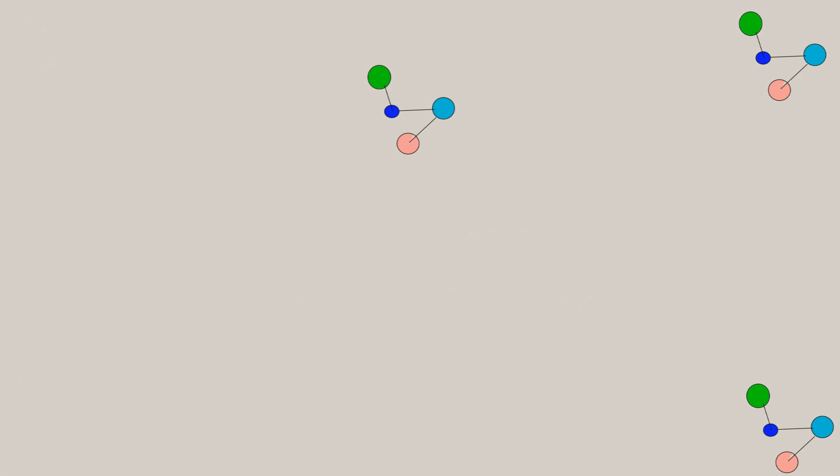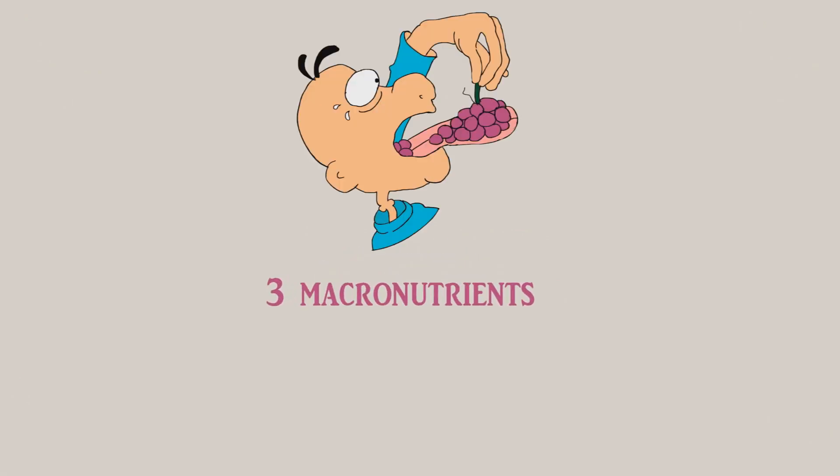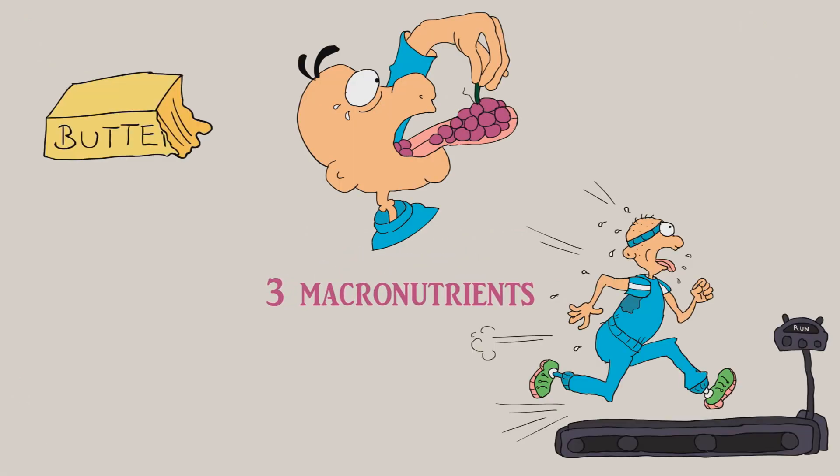The human body needs three main macronutrients from the food we eat to keep our body running. Fats, carbohydrates, and of course, proteins.